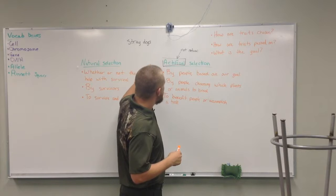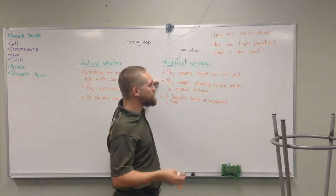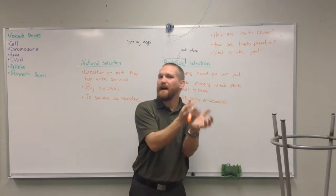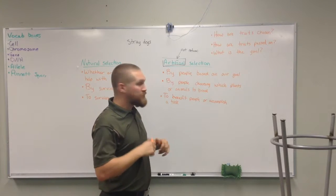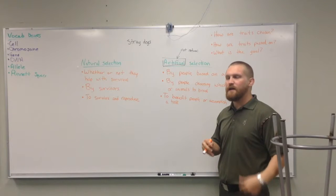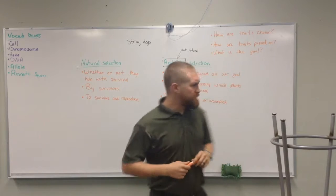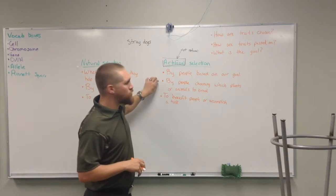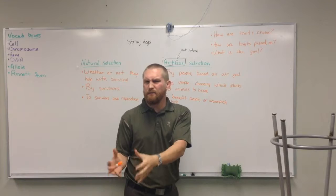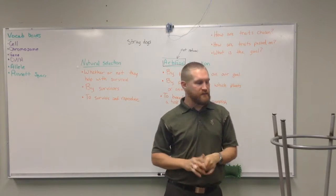They had a goal: make a bomb-sniffing dog. They chose to breed a husky and jackal to get both a good sense of smell and high trainability. The first generation had a pretty good sense of smell but still couldn't be trained well, so they kept inter-mixing until they got the right combination. It was always by people choosing — picking the best puppy from each litter and breeding it forward.